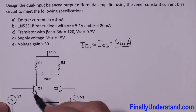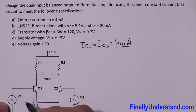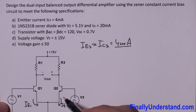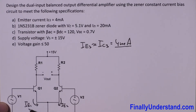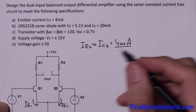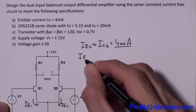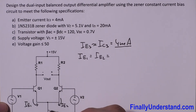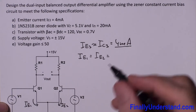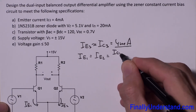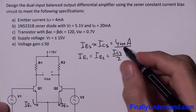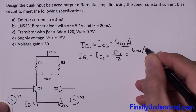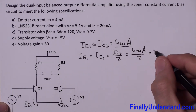You should also remember that the sum of currents IE1 and IE2 is going to give me current IC3. So if I want to find IE1 and IE2, I can simply write that IE1 equals IE2, which is half of IC3. So this is IC3 divided by 2, where IC3 is 4 milliamps divided by 2, which equals 2 milliamps.